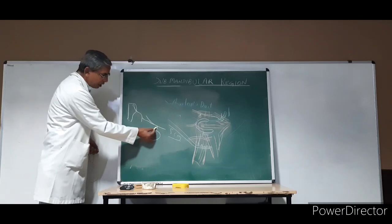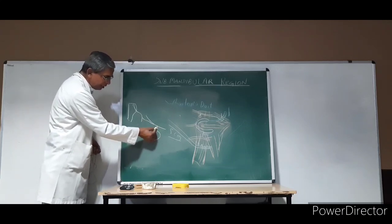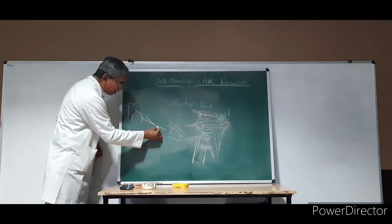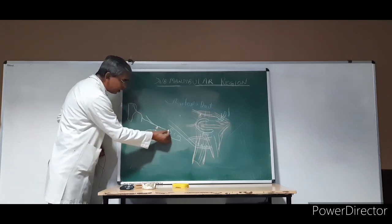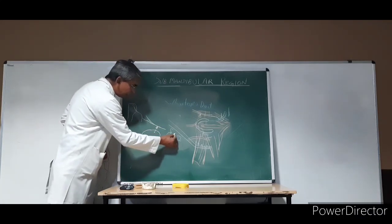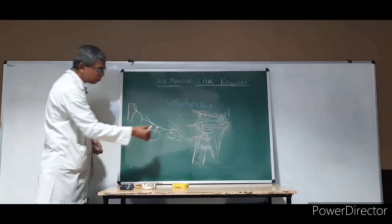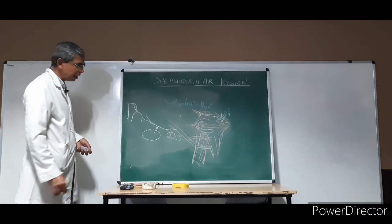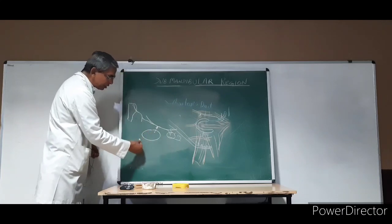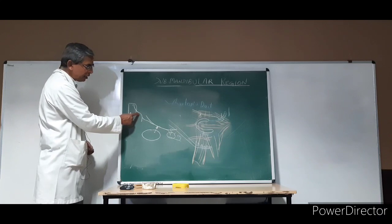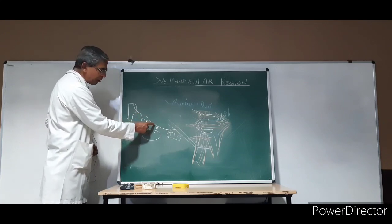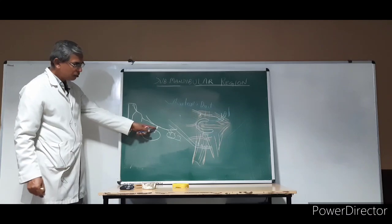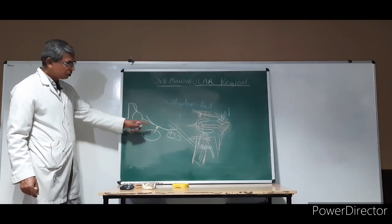The pre-ganglionic parasympathetic fibre ends here in the submandibular ganglia, and the post-ganglionic fibre starts. Some fibres also enter the sublingual gland and supply the sublingual gland as well. When the lingual nerve passes close to the sublingual gland, the post-ganglionic fibre supplies the sublingual salivary gland. So the parasympathetic fibre comes from the superior salivatory nucleus, travels through the facial nerve, then via the chorda tympani, communicates with the lingual nerve, and the pre-ganglionic fibre ends in the submandibular ganglia while the post-ganglionic fibre supplies the gland.